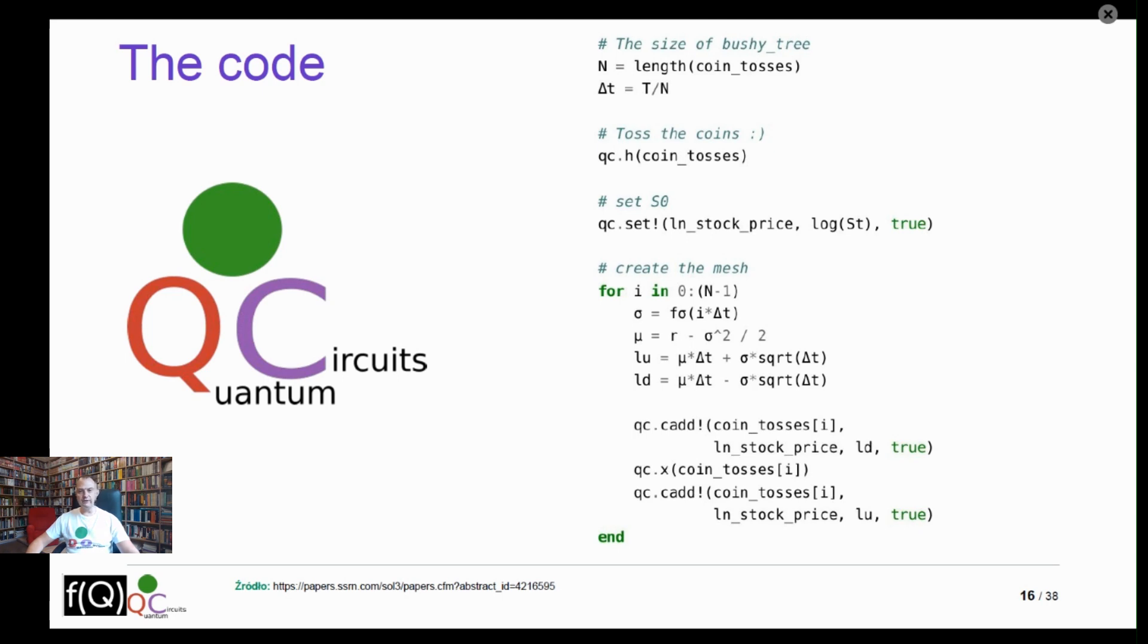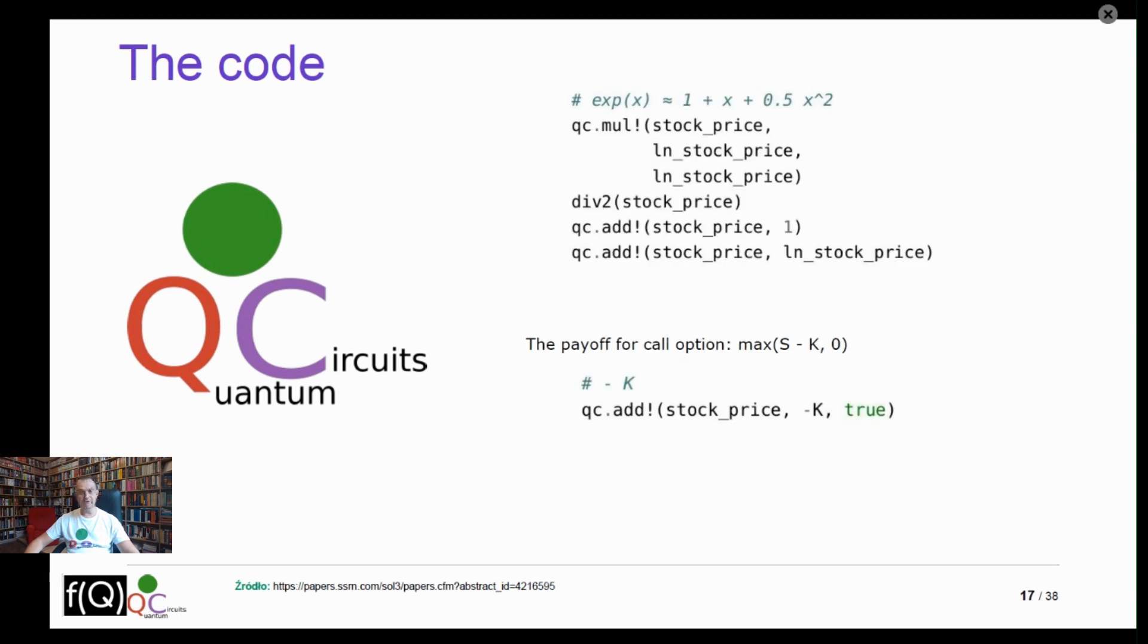Now we are ready to see the implementation. First, we run the coin toss with the Hadamard gate. We initialize the stock price with the value at time zero. And then for each time step, we generate the volatility and use it to calculate parameter u and d. After the final value of stock price is generated, we have to calculate the exponential value of it. It's worth something that we don't have to remember where the decimal point is here. We can simply use the quantum register and the addition function.